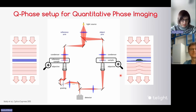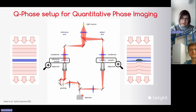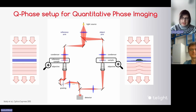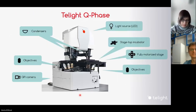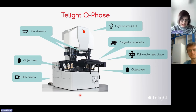The light beams from both arms are set up properly, they match each other, and together they are recombined and create the hologram at the output. The hologram is a complex record of the light wave and it is captured by the camera.